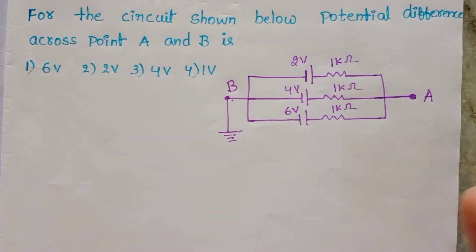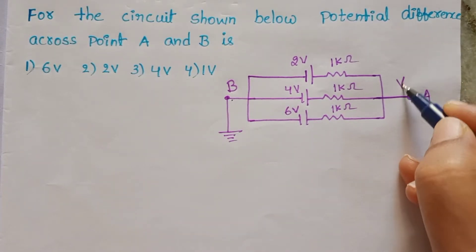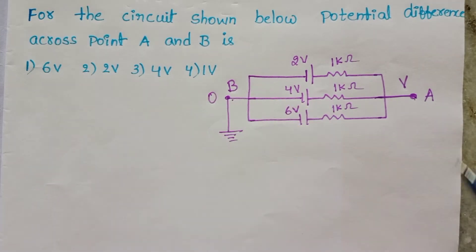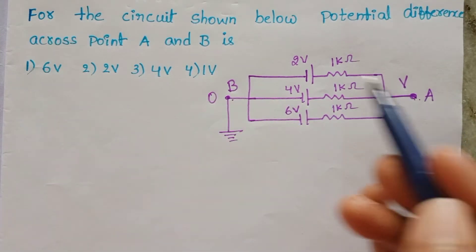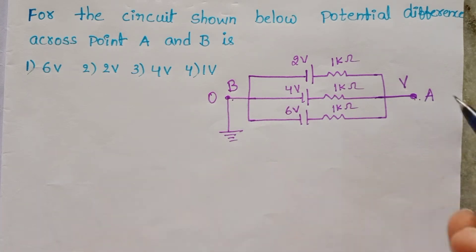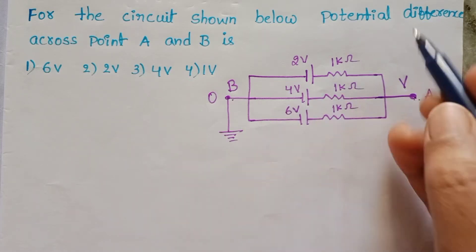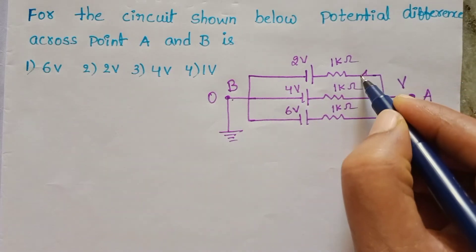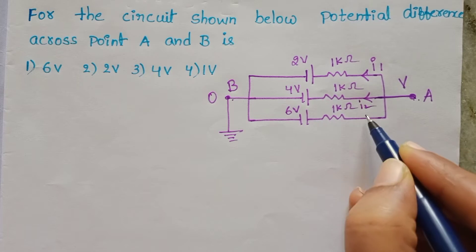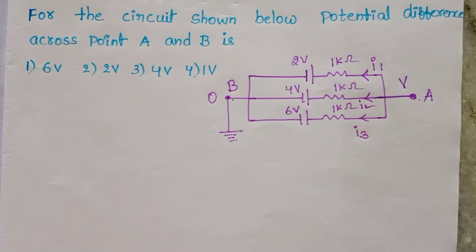Let the potential at point A be maximum, let it be V, and at point B the potential is 0. So the potential difference between A and B is V minus 0. The current passing through this 1kΩ resistor along this direction, let it be I1, along this direction I2, and along this direction let it be I3.